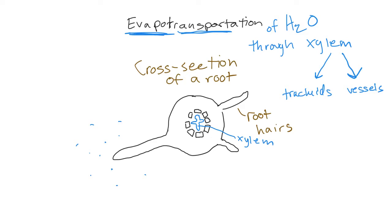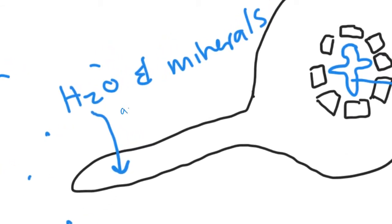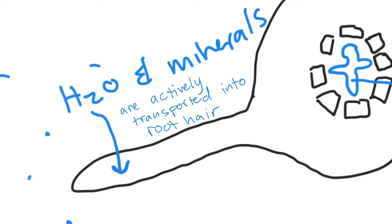The first step is that water and minerals are actively transported into the root. You actually don't have to actively transport the water if you can create a hypertonic solution in the root. If you actively transport minerals, then the water will flow into it. So minerals go in here and then the water is going to follow.